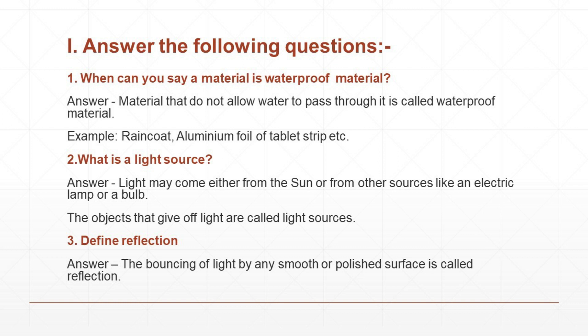Number 2. What is a light source? Answer: light may come either from the sun or from other sources like an electric lamp or a bulb. The objects that give off light are called light sources.